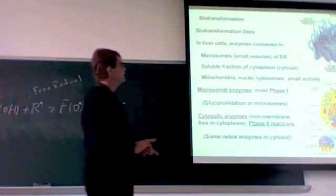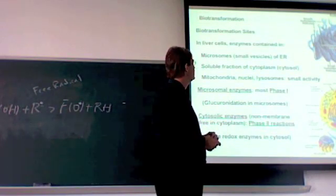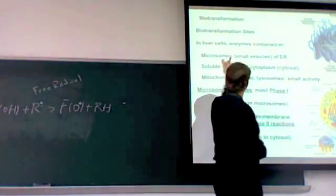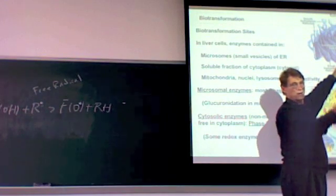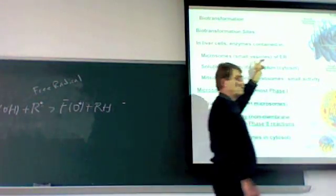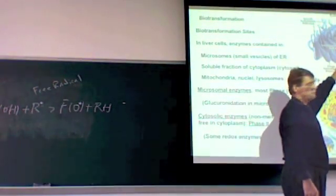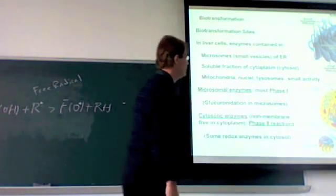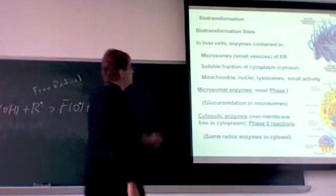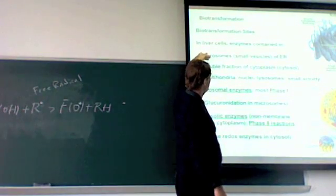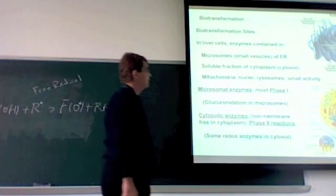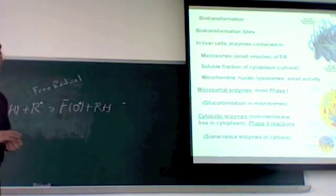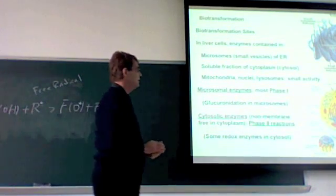We talked about this a little bit. This is the two biotransforming sites. One is in the microsomes of ER. I said, microsomes are just an artifact. There are no microsomes here. They're created by their extraction method. So really when we're saying they're in the microsomal fractions, we're saying they're associated with the membranes of the ER, specifically the rough ER. So enzymes are contained in this microsomal fraction or in the soluble fraction of the cytoplasm, which is all this yellow material in the cell itself. Mitochondria have some activity. Nuclei, some activity. Lysosomes.